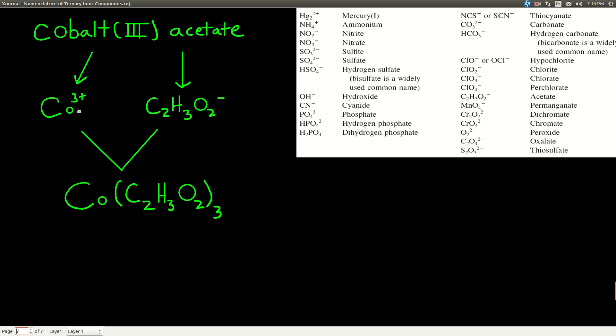Well, balancing charges, we have 3 positive charges. We have to have 3 negative charges, which means we have to have 3 of these guys, 3 acetates. Well, to do that, we have to put parentheses around the acetate, put a 3 outside, and there we have the formula for cobalt three acetate.